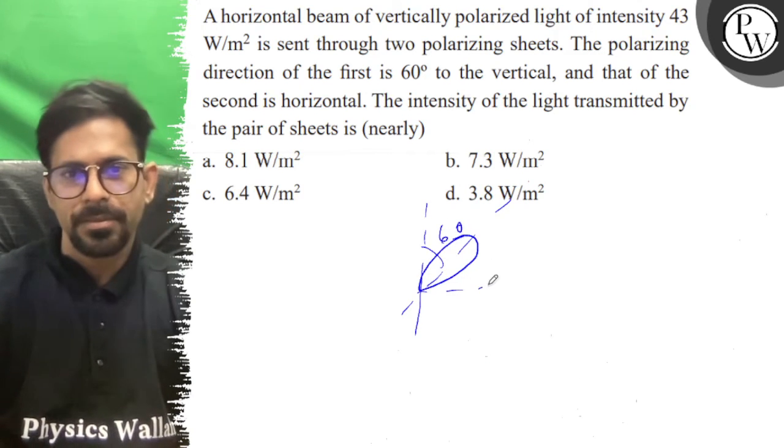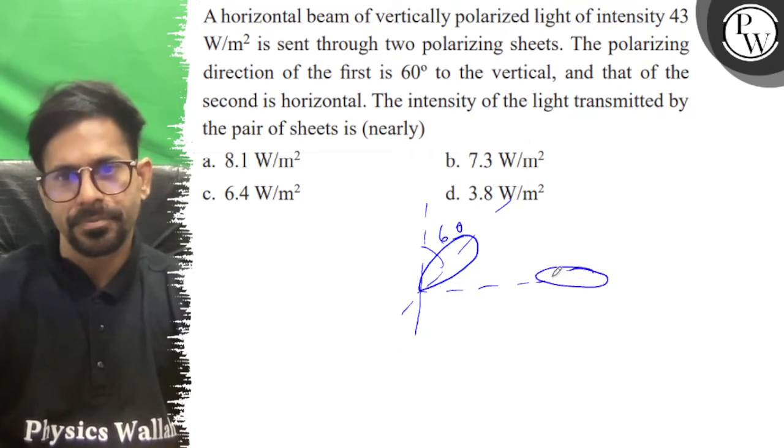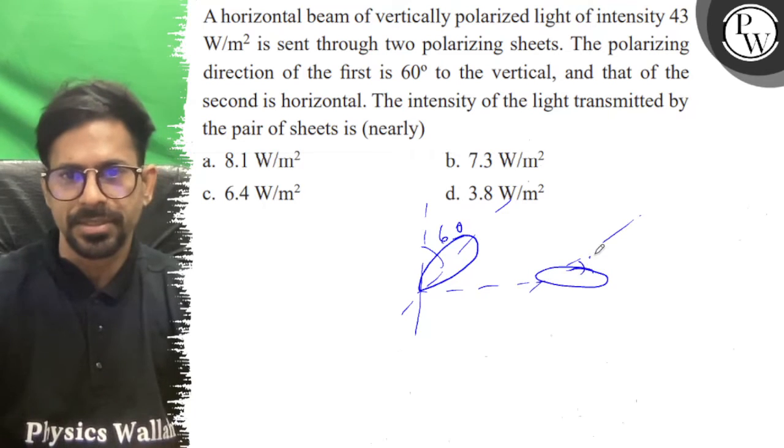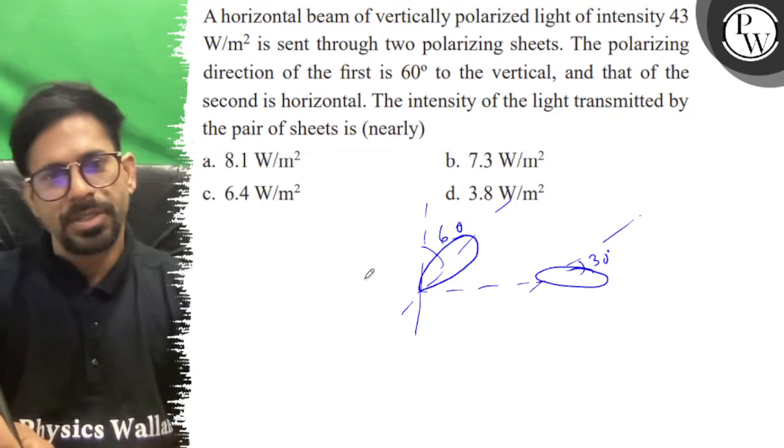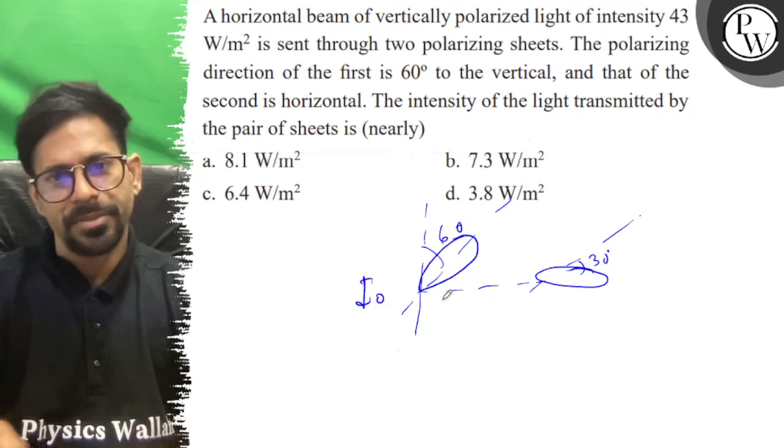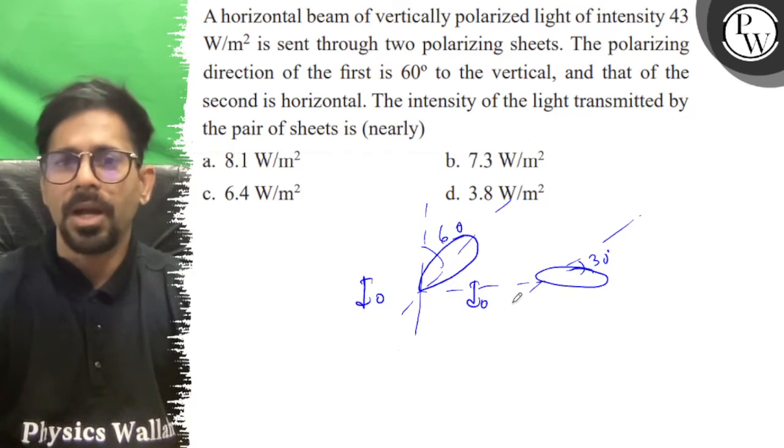The other sheet is horizontal, which means there's a 30-degree angle between them. So here, the initial light intensity is I₀.